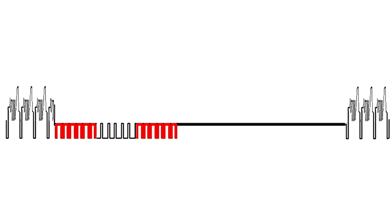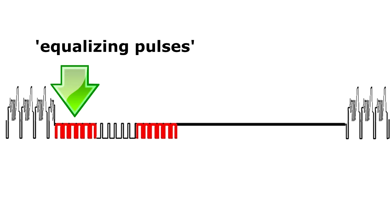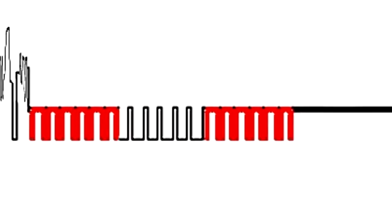To make this rather complex process happen successfully, we put into the vertical interval signal one group of six equalizing pulses just before the vertical sync pulse, and the second group of equalizing pulses just after the vertical sync pulse. Basically, the equalizing pulses make sure that interlacing happens properly and starts the scanning at the proper points in each of the two video fields.